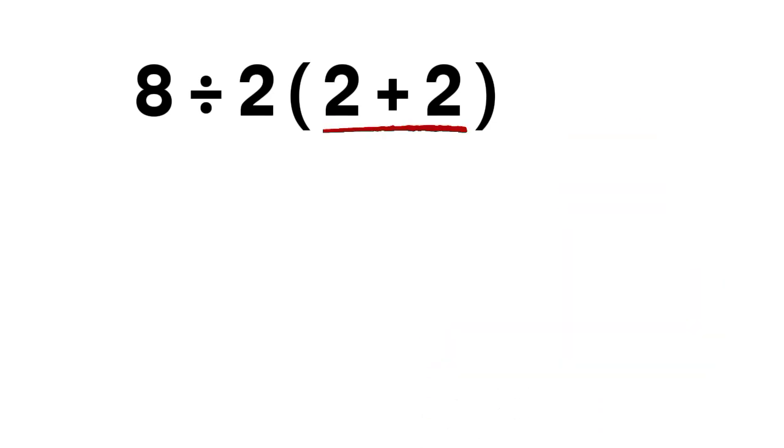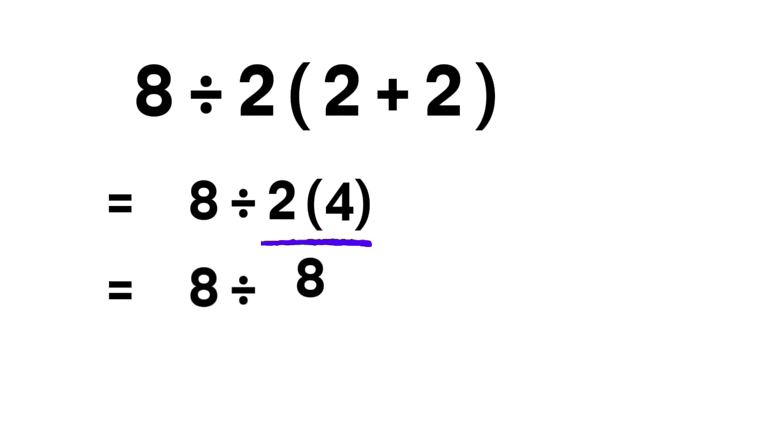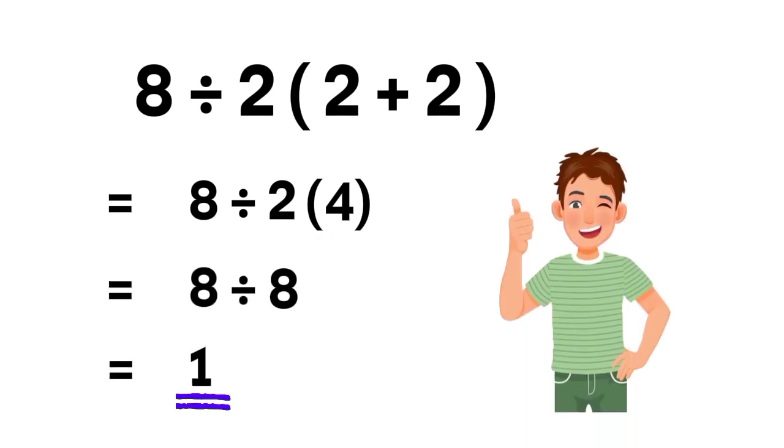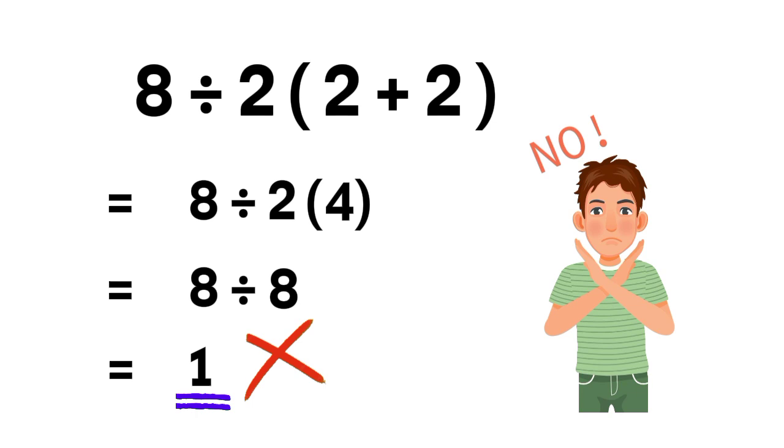Many people start by adding 2 plus 2, which gives 4. Then they take 2 times 4 and get 8. Then they say 8 divided by 8 equals 1. It feels clean, it feels quick, but that is not the correct answer.